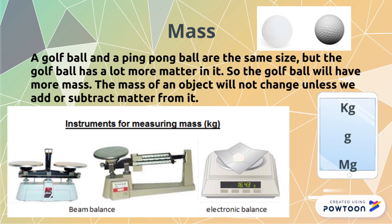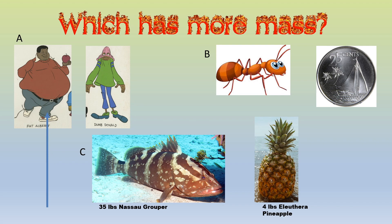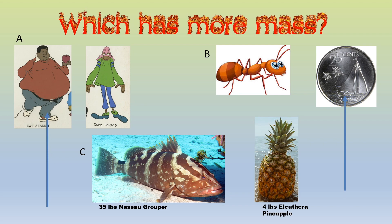Which has more mass? A — our favorite cartoon characters from Fat Albert. You have Tom, Donald, and Fat Albert. Which one has more mass? Correct — Fat Albert. Let us look at B. You have an ant and a Bahamian 25 cents. Which one has more mass? Very good — the 25 cent coin has more mass.